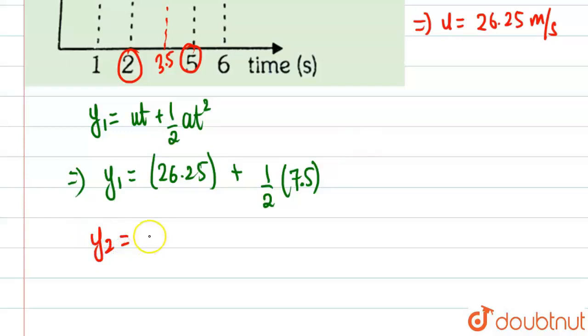So y2 will be equal to ut plus half a t square. u is again same, half a t square will be... we are checking our time is equal to two seconds. So this will be equal to half into 7.5 into two square.